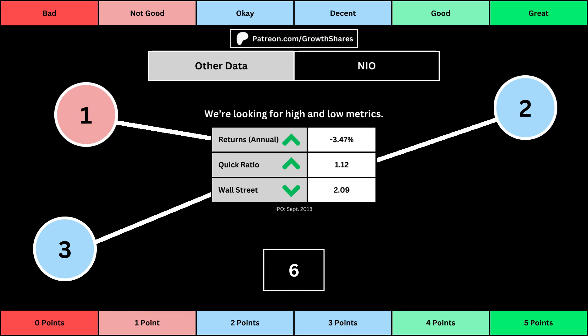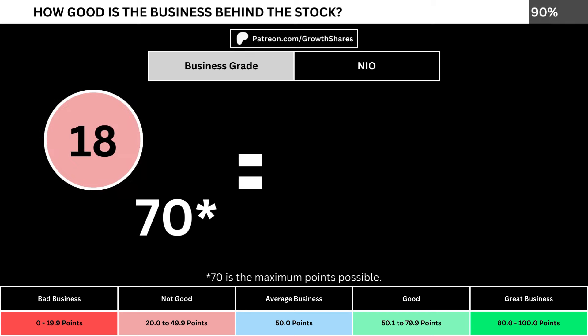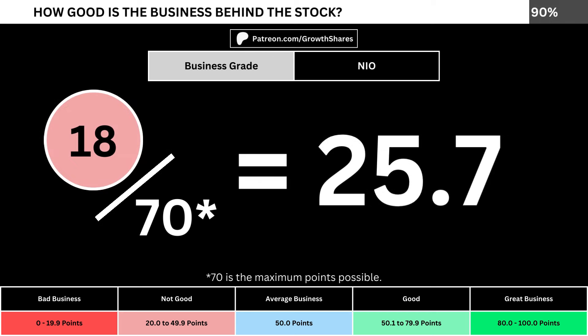The quick ratio is basically how easy it is for the business to pay off its short-term obligations — we want that high so that it's easy to get rid of those debts. And then Wall Street is the average consensus rating Wall Street analysts give the stock, from a strong buy of 1 to a strong sell of 5. The better values get a higher point total. Adding everything together, we divide the points awarded by the maximum points possible, which is 70, and that gives us the business grade for the company.